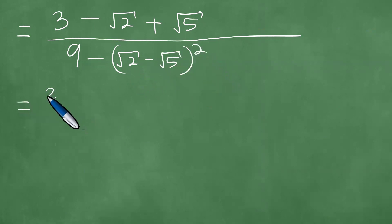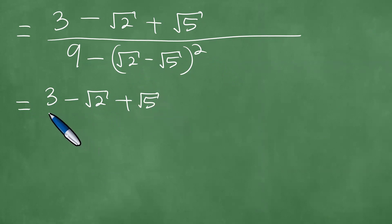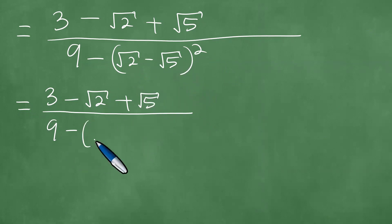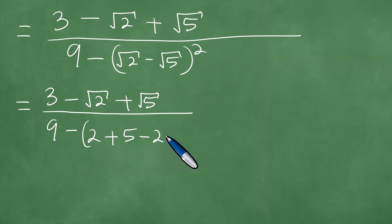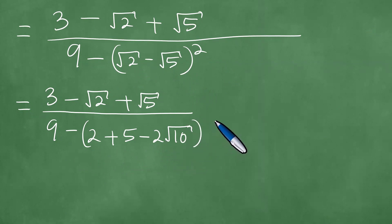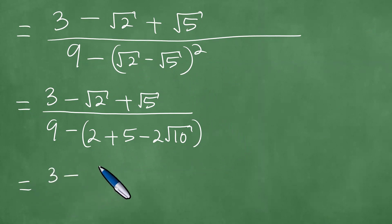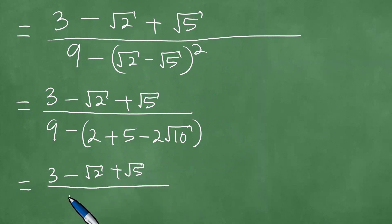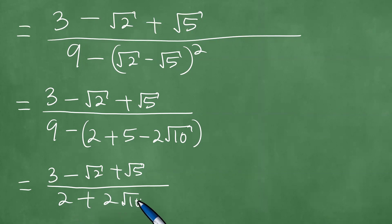This means you have 3 minus the square root of 2 plus the square root of 5. So it is 3 minus the square root of 2 plus the square root of 5 divided by — now 2 plus 5 is 7, nine minus seven is two, plus two times the square root of 10.